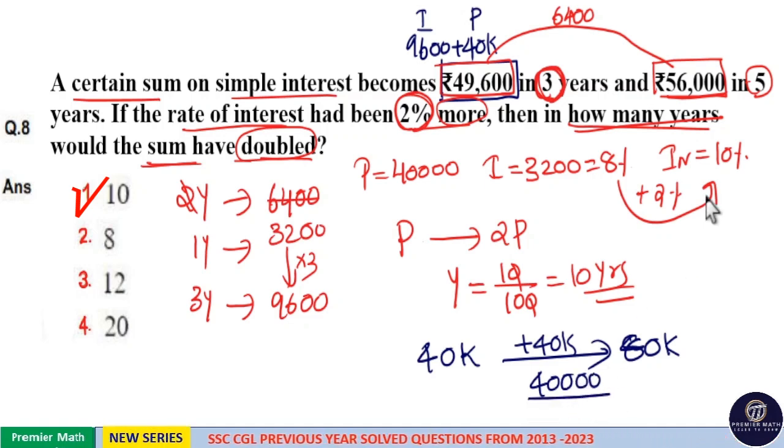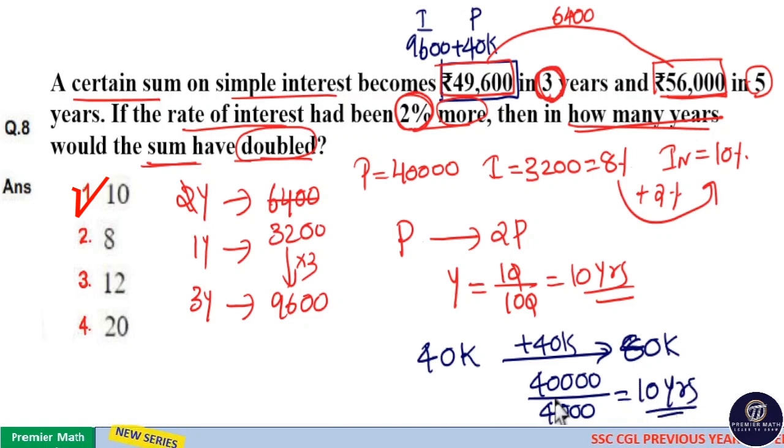At 10% per annum, the interest generated in 1 year is ₹4,000. That is, 10% of ₹40,000 is ₹4,000. So ₹40,000 ÷ ₹4,000 equals 10 years. In 10 years, ₹40,000 interest will be generated. Therefore, the answer is 10 years.